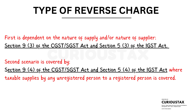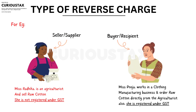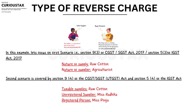For example, an agriculturalist dealing in raw cotton — who is unregistered under GST — sells directly to a clothing manufacturer who is registered under CGST. This covers both scenarios: the nature of supply is raw cotton, the nature of supplier is an agriculturalist, and the unregistered supplier is selling to a registered buyer.